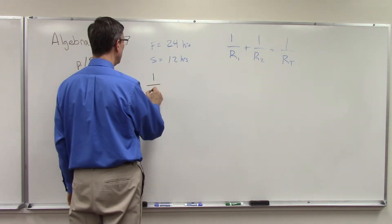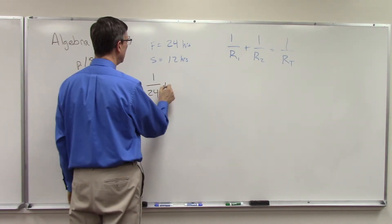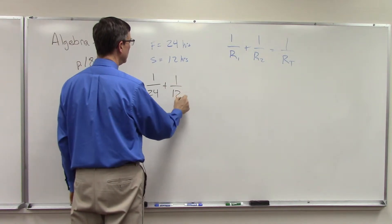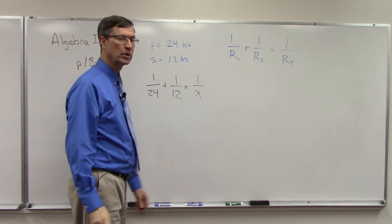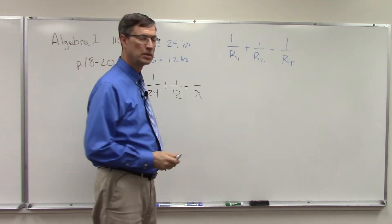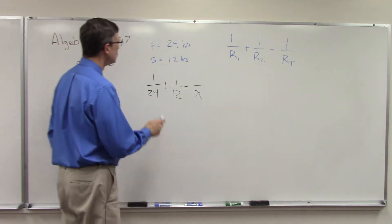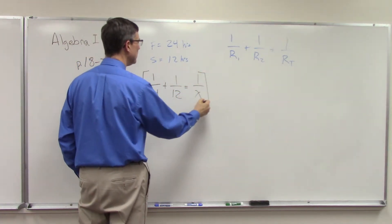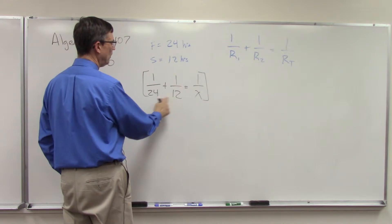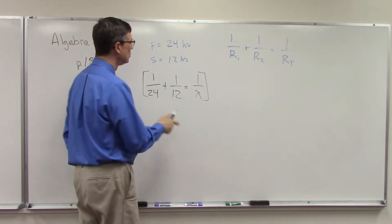So we're going to first do 1 over 24 plus 1 over 12 equals 1 over and we'll call it X. And we're trying to figure out how many hours it's going to take. So what is the common denominator of this entire equation? Well 12 is a factor of 24, so actually 24x is the least common denominator here.